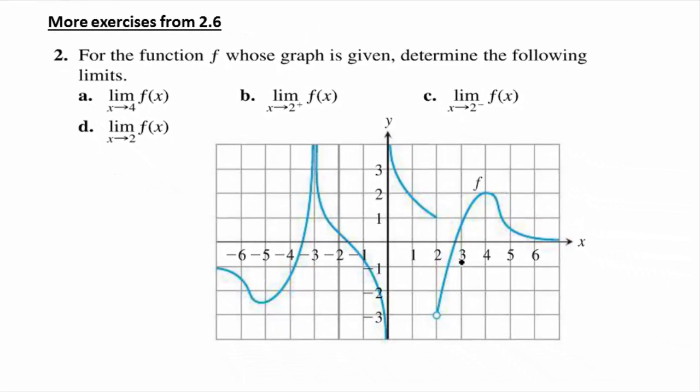More exercises from section 2.6. This will go swiftly because we have done one-sided limits before, but here we're just adding more for horizontal and vertical asymptotes.